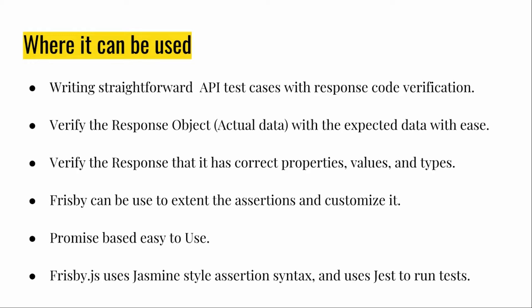You can use Frisbee.js to write straightforward API test cases with response verification. If you have a response object you want to verify against expected data, or you want to verify it has correct property values and types, it's very helpful. It's promise-based, so if you know JavaScript promises — if this happens then that happens — Frisbee.js is a great choice. It uses Jasmine-style assertions like 'expect this to equal this', and internally it uses the Jest framework, which is a test framework created by Facebook.